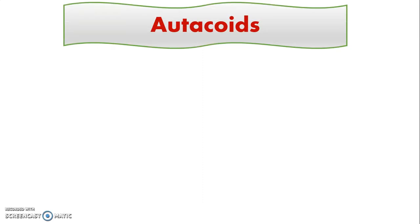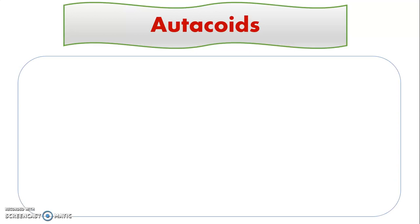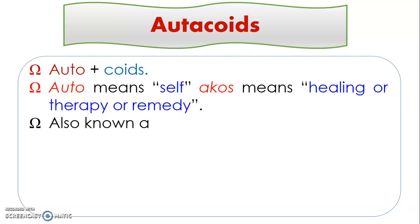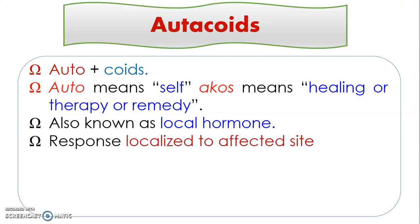Autocoids is made of two words. The first one is 'auto', meaning self, whereas the second one is 'coids', meaning healing, therapy, or remedy. Autocoids are also known as local hormones. They respond locally to the affected site — their action is localized to the site where infection, injury, or inflammation is reported.